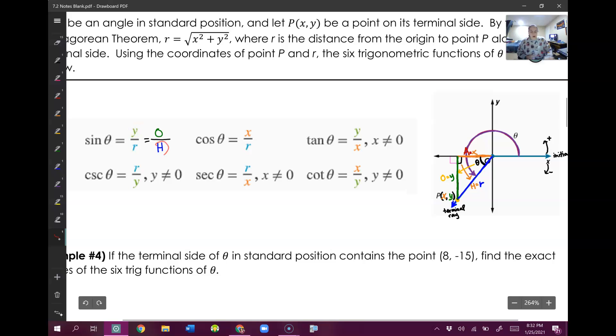My hypotenuse side is my R side. That's where they came up with this Y over R thing. So sine of theta isn't just opposite over hypotenuse. It's the Y value over the R value.